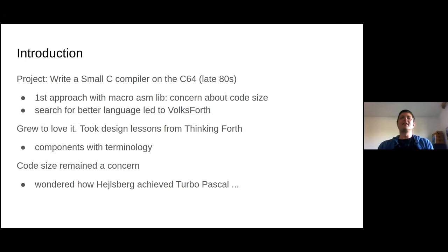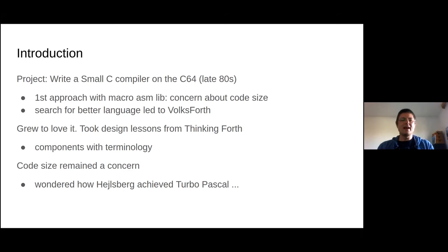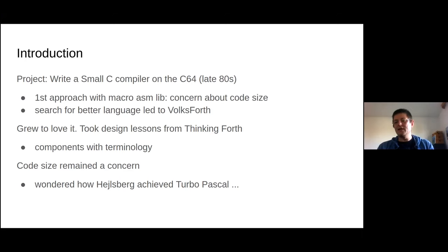We're talking the late 80s. My first approach was with a macro assembler. After writing a scanner and a symbol table, assembling became very slow and I started getting concerned about code size. I searched for a better language and ended up with VolksForth — it was called Ultra Forth for the Commodore 64 back then, because in the Commodore space things needed to have boastful names.